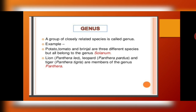A group of closely related species comes together to form a genus. For example, potato, tomato, and brinjal all belong to the same genus Solanum. Panthera leo, Panthera pardus, and Panthera tigris — lion, leopard, and tiger — all belong to the genus Panthera. You can see there are common characteristics between them.